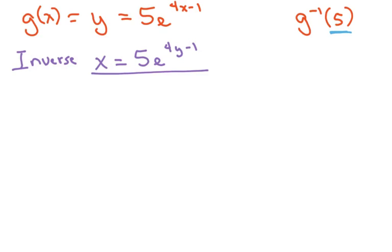So what I'm going to do on this one is go ahead and input my x. My x is 5, so I'm going to input 5 equals 5e to the 4y minus 1 power. Divide both sides by 5, so I'm going to get 1 equals e to the 4y minus 1.